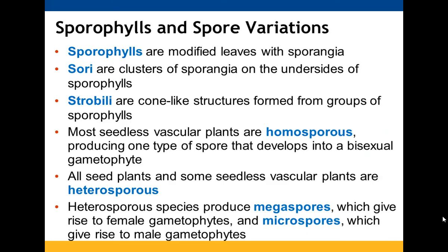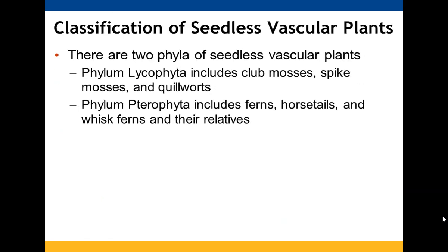Sporophylls are leaves that bear sporangia. Seedless vascular plants are generally homosporous — they make one type of spore that can develop into either a female or male gametophyte. Seeded plants, and some seedless vascular plants, are heterosporous, producing both megaspores that lead to female gametophytes and microspores that lead to male gametophytes.